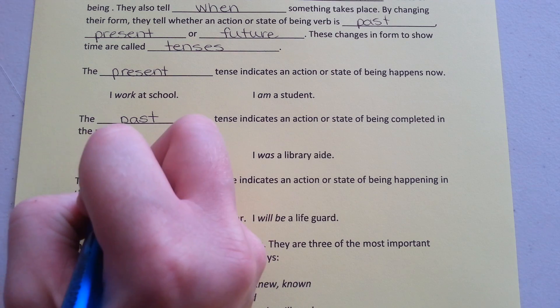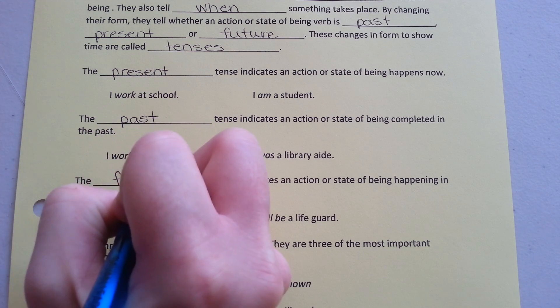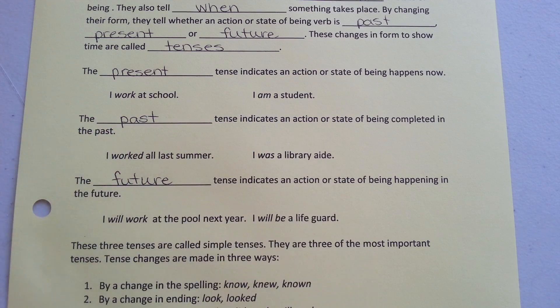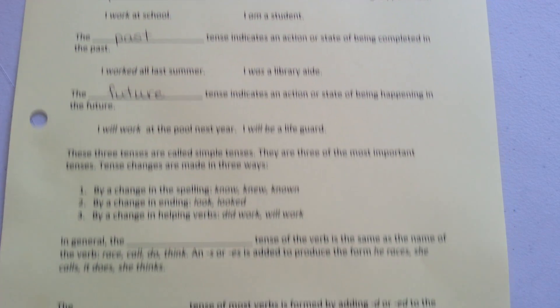The future tense indicates an action or state of being happening in the future. For example: I will work at the pool next year. I will be a lifeguard.